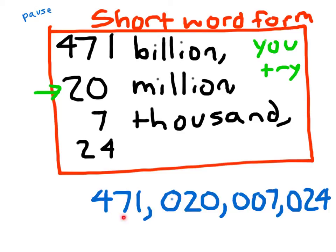I'll let you try it again: four hundred seventy-one billion, twenty, twenty, twenty million. Oops, I messed up. Forty-seven... seventy-one billion, twenty million, seven thousand, twenty-four. So that's reading large numbers. Try not to say and.